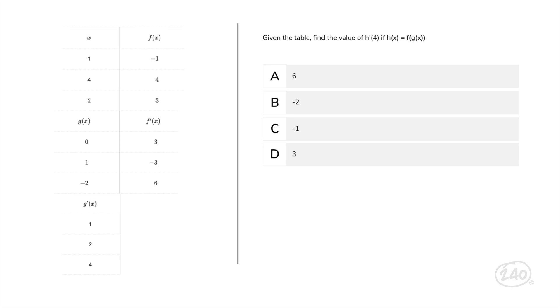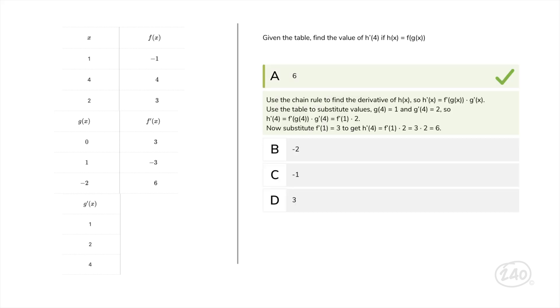Given the table, find the value of h prime of 4 if h of x equals f of g of x. Use the chain rule to find the derivative of h of x. So h prime of x equals f prime of g of x multiplied by g prime of x. Use the table to substitute values. Then g of 4 equals 2. So h prime of 4 equals f prime of 1 multiplied by 3. Now substitute f prime of 1 equals 3 to get h prime of 4 equals 3 multiplied by 2 which equals 6. So the right answer is A.